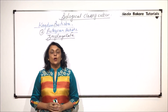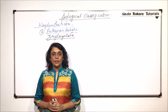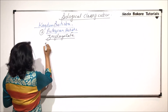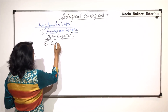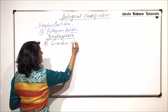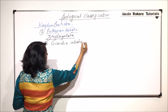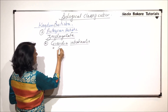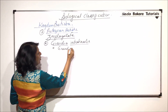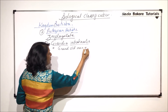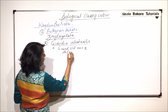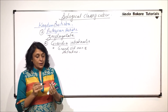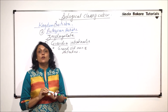In this part, we'll talk about two more zooflagellates. We have discussed three, so this is the fourth one that we are talking of, and it is Giardia intestinalis. It is commonly known as the Grand Old Man of Intestine. Once we draw its diagram, it will be clear why this name has been given to this particular zooflagellate.